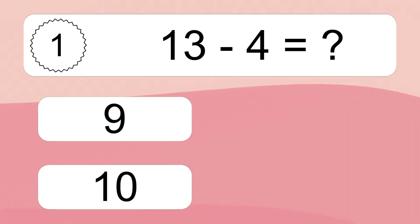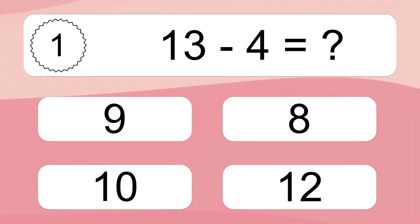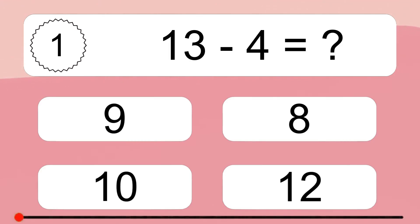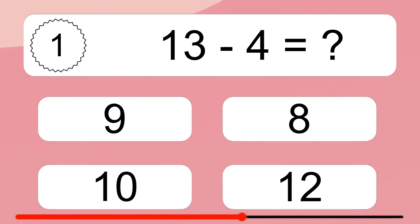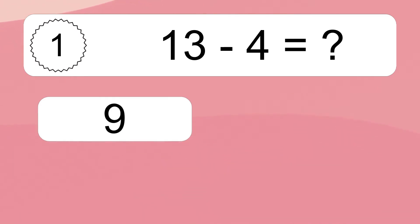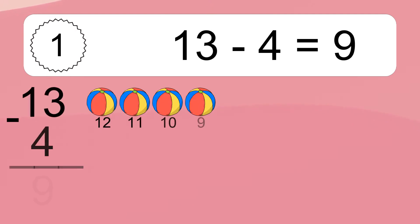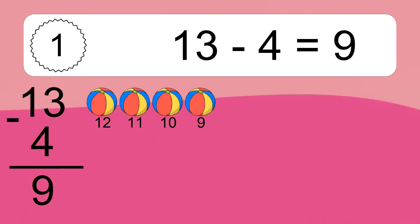13 minus 4 equals what? 13 minus 4 equals 9. Let's count it: 12, 11, 10, 9.